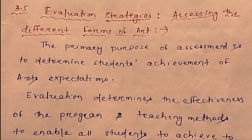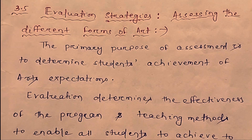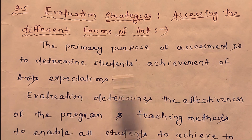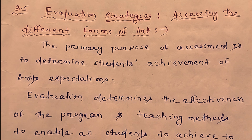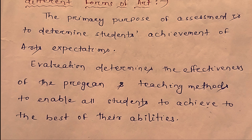Section 3.5 covers evaluation strategies for assessing different forms of art. The primary purpose of assessment is to determine students' achievement of art expectations. Evaluation determines the effectiveness of the program and the teaching methods to enable all students to achieve the best of their abilities.